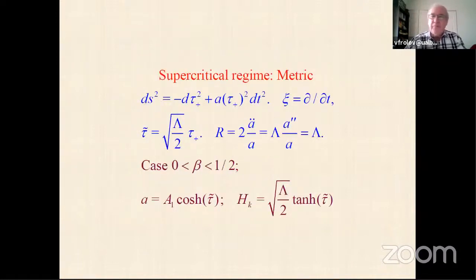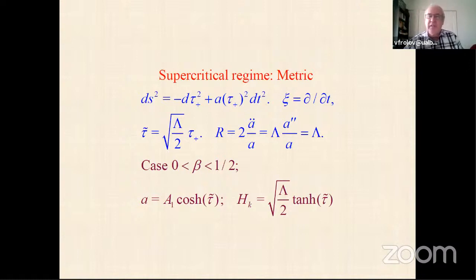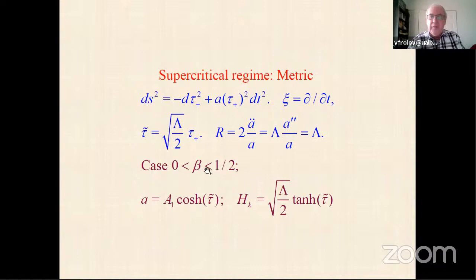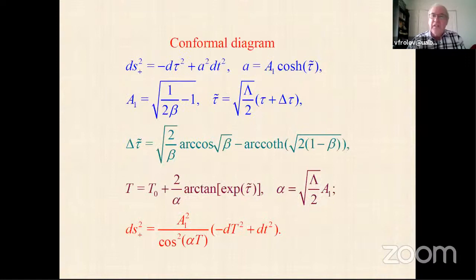In the supercritical domain, the curvature equals lambda, meaning the space-time is locally isometric to two-dimensional de Sitter space. The de Sitter space has three Killing vectors; we use the one tangent to the junction surface sigma, which is space-like. When beta is less than one half, the scale factor A changes as the hyperbolic cosine of the rescaled proper time, and the Hubble constant is the hyperbolic tangent of this parameter.